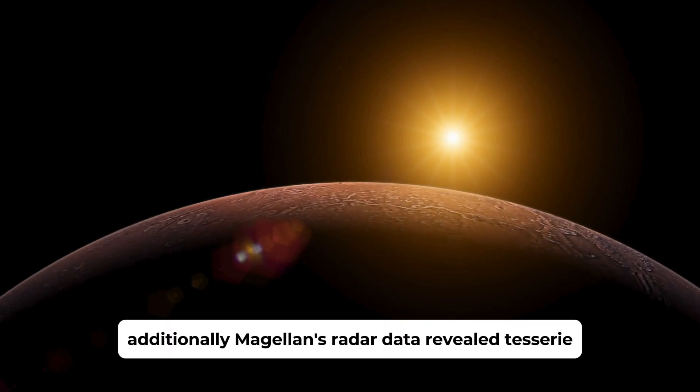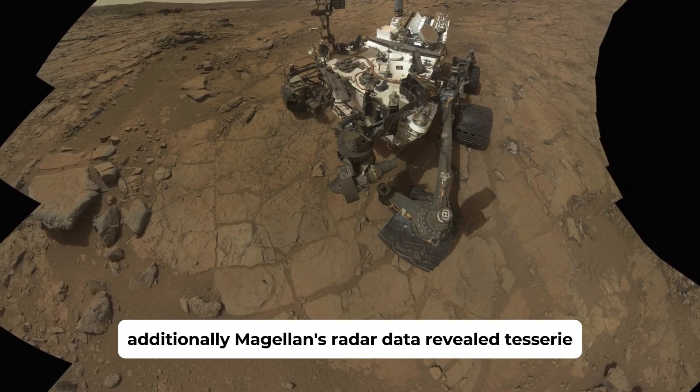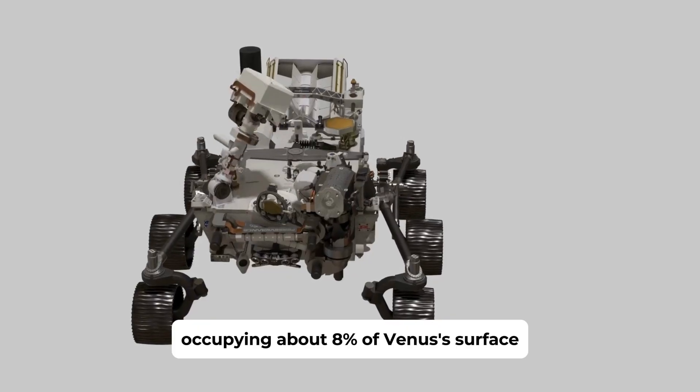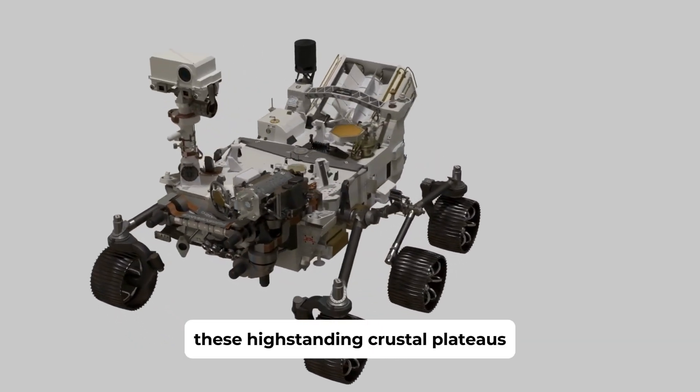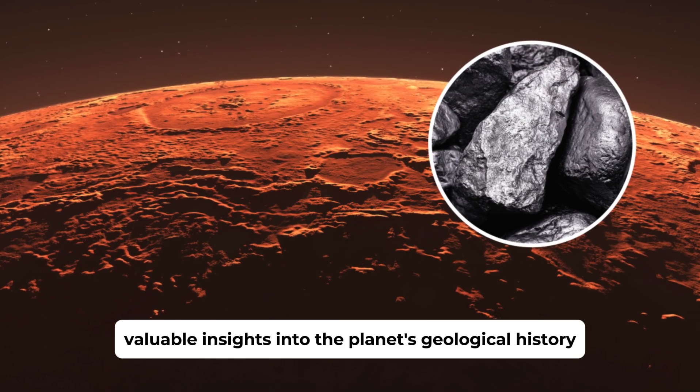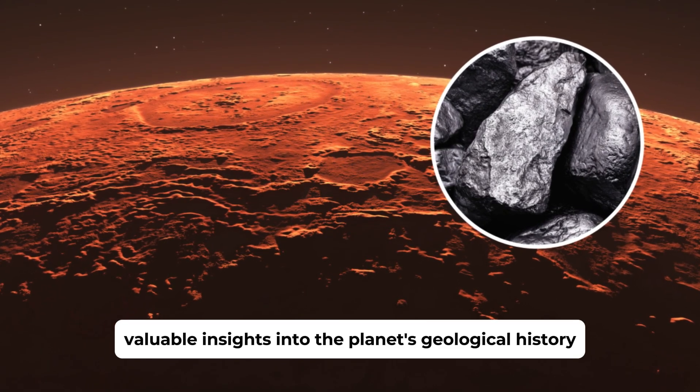Additionally, Magellan's radar data revealed Tesseri, tectonically complex units occupying about 8% of Venus's surface. These high-standing crustal plateaus, invaded by lava flows, are unique to Venus and offer valuable insights into the planet's geological history.